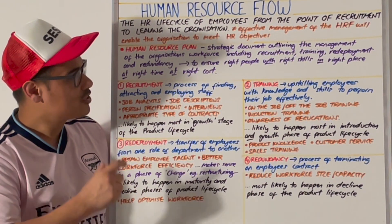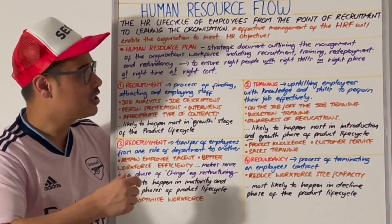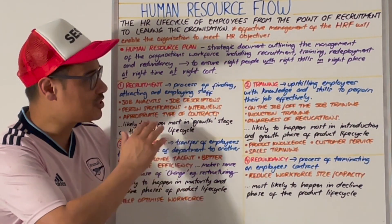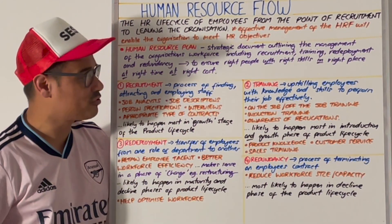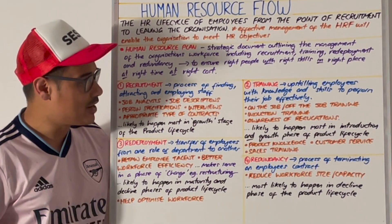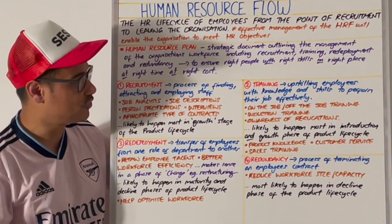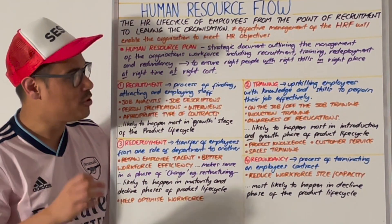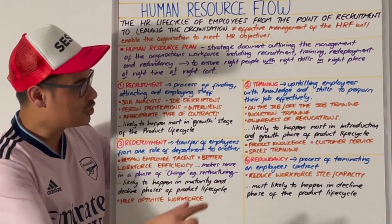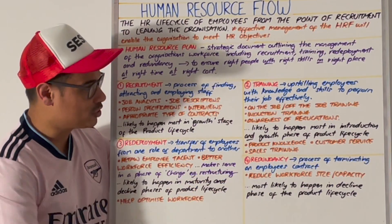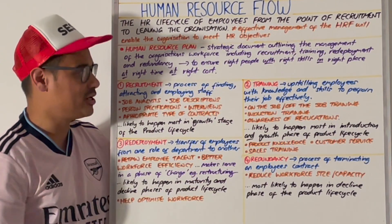The second phase is training — the upskilling of employees with knowledge and skills to perform their job effectively. This could be on-the-job or off-the-job training, induction training, or simply giving them industry regulation awareness. In relation to the product lifecycle, training is likely to happen most in the introduction and growth stages, as you're giving employees product knowledge, customer service, and sales training in the earlier stages.